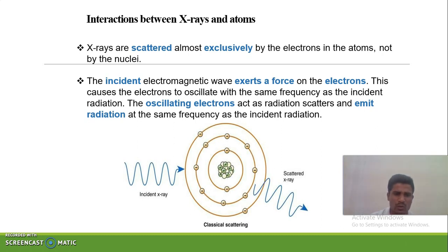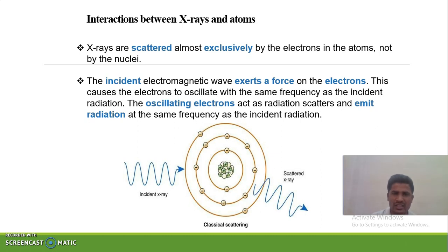In simple words: whenever the incident X-ray interacts with any atom, the innermost electrons get knocked out, and the vacant electron position is taken by the outermost shell electrons. In this way, X-rays are produced.